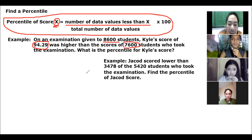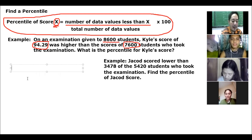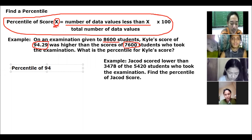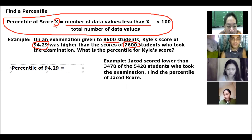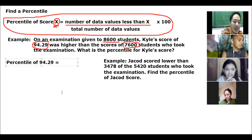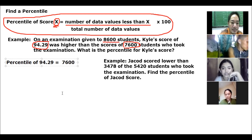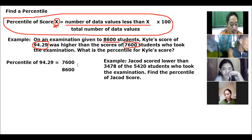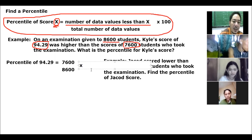So ang sagot natin: percentile of score 94.29 is equal to the number of data values less than x, which is 7,600, divided by the total number of data values, which is 8,600, multiplied by 100.